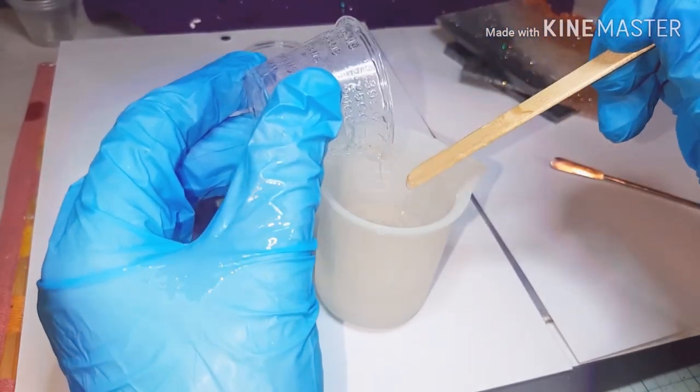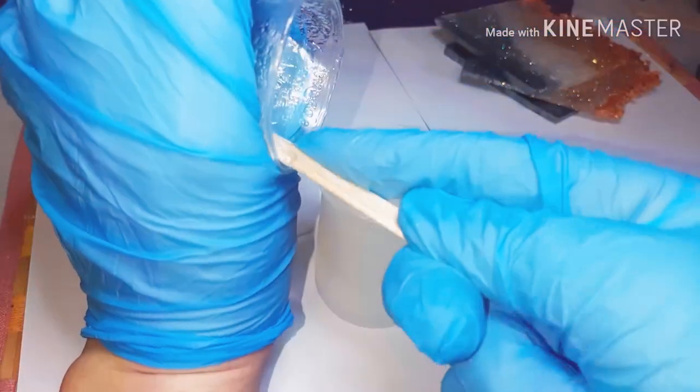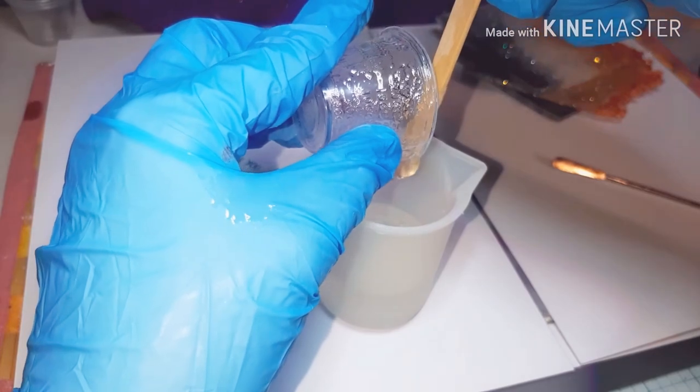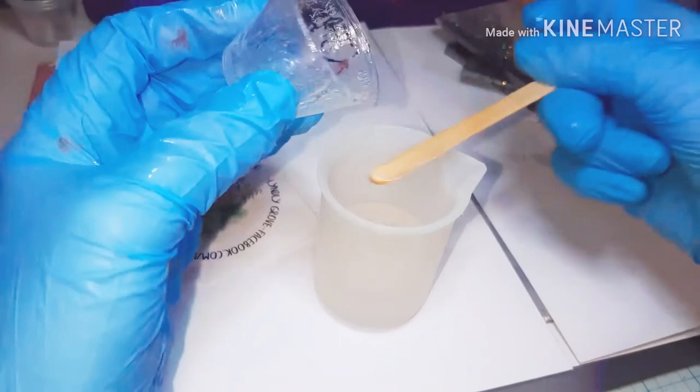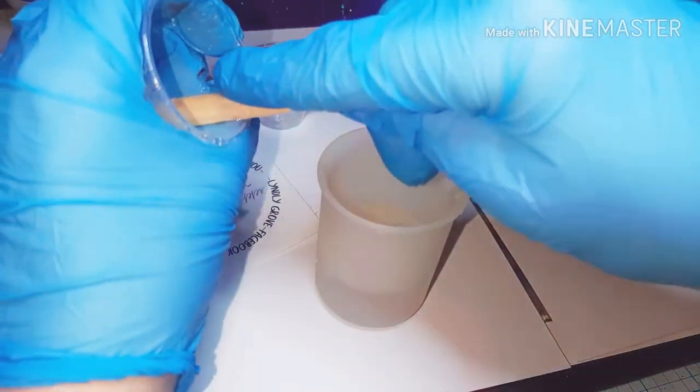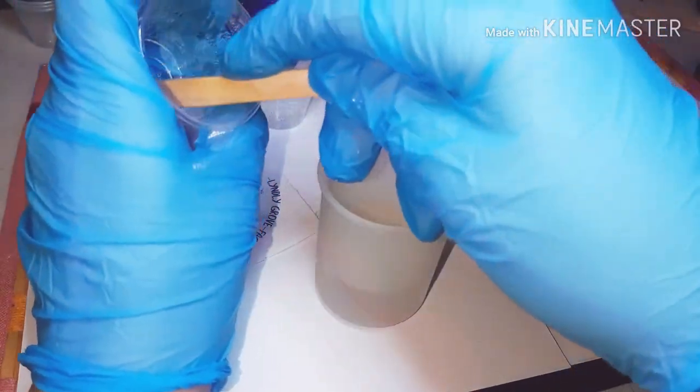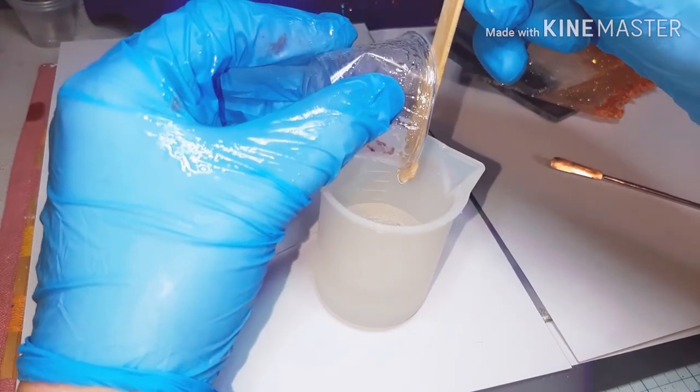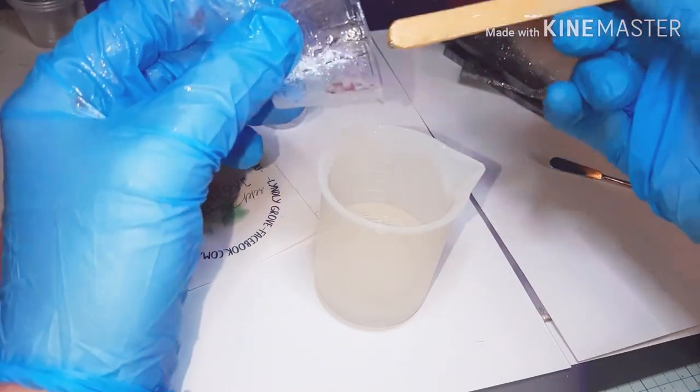So again, we're just scraping all of our part A out of our medicine cup, making sure we're scraping those sides really well. And you might also notice that I'm not scraping the side of my popsicle stick on the side of my silicone cup here. I'm using the side of my medicine cup to scrape it and letting it fall in the middle rather down the side. And that is also another thing I do to ensure that I'm getting all of that product out and into my silicone cup.